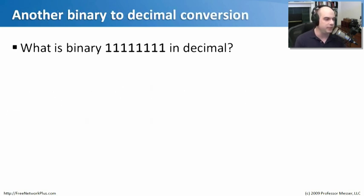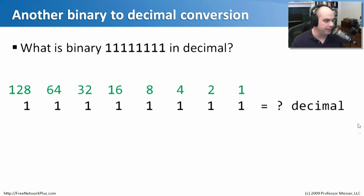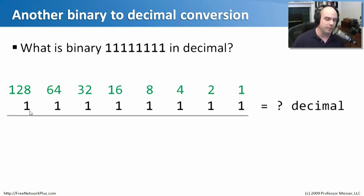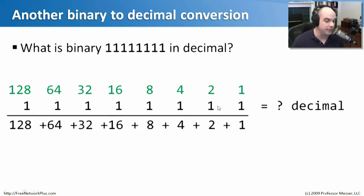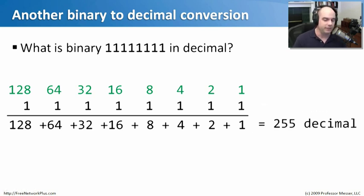Let's do another one — I made this one almost easier. What is binary 11111111 in decimal? We do the same thing: put all eight ones down, put our binary-to-decimal conversion chart right on top, and every place we see a 1, bring that number down and add all of those numbers together. In this case, every single bit is a 1, so we bring down every number: 128 plus 64 plus 32 plus 16 plus 8 plus 4 plus 2 plus 1. The answer is 255.